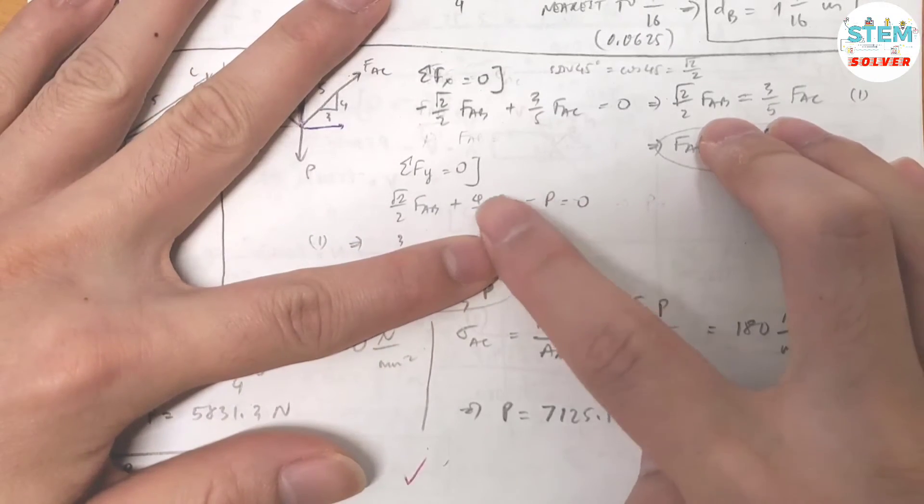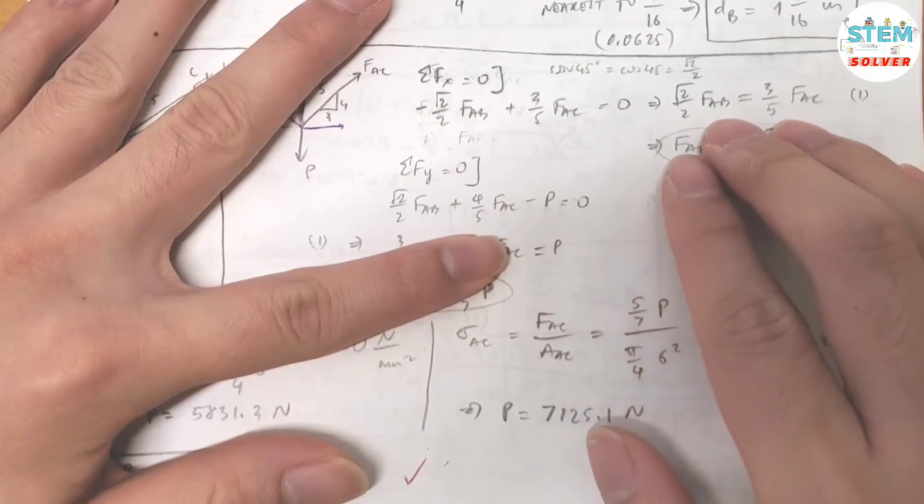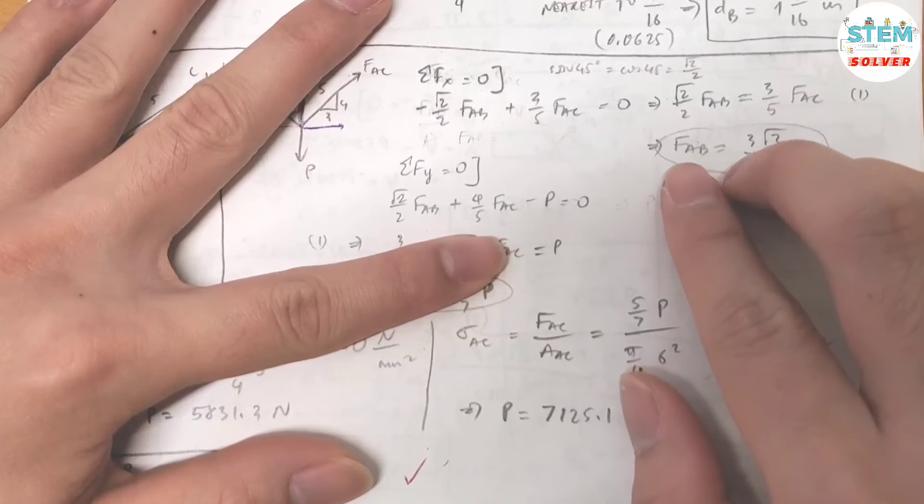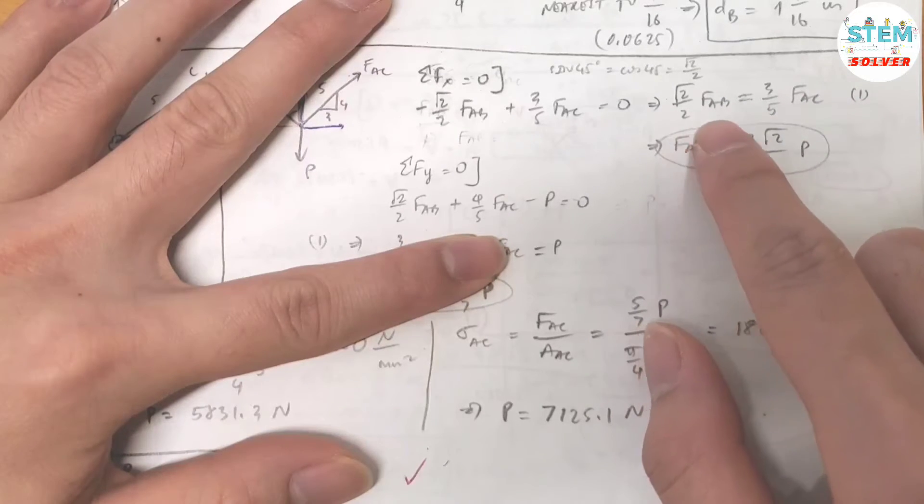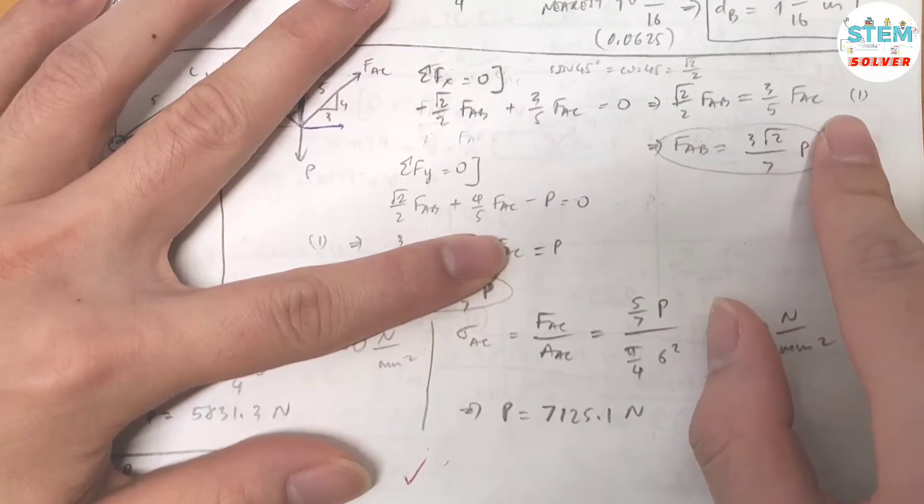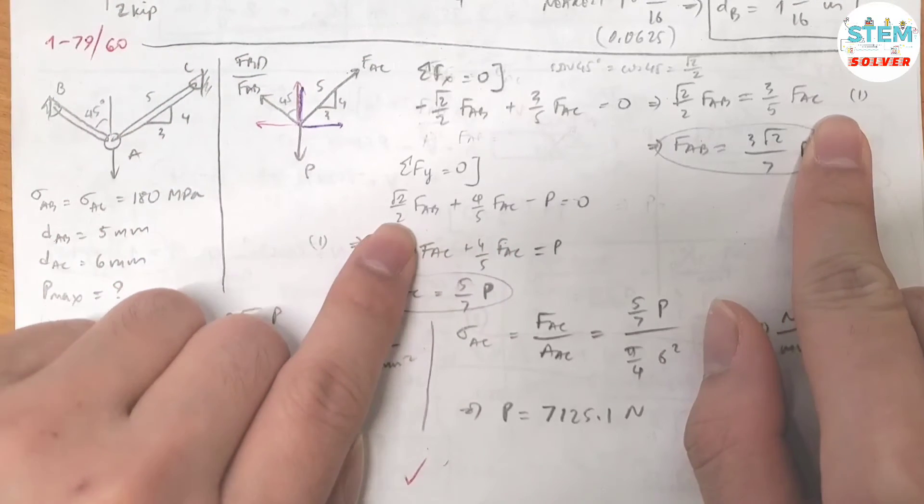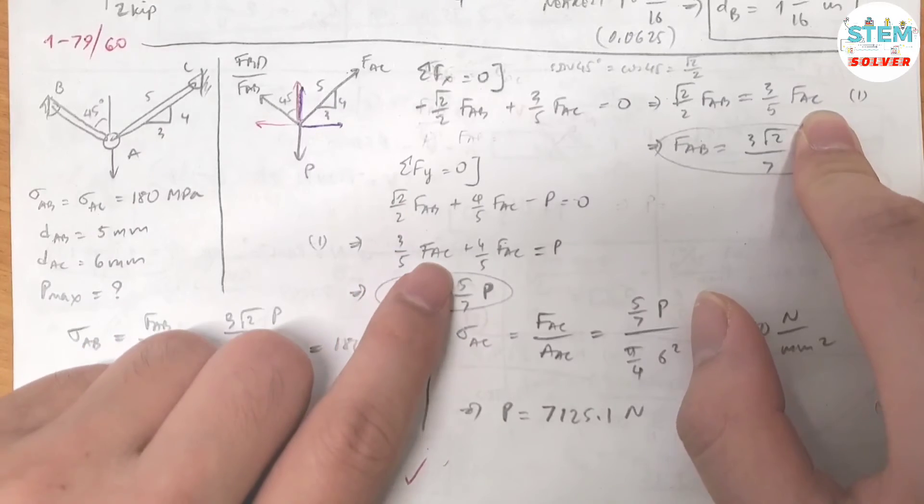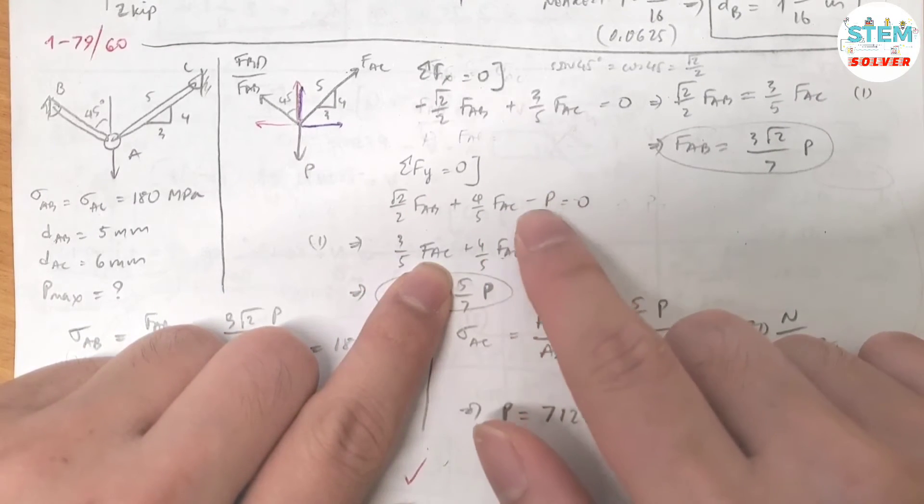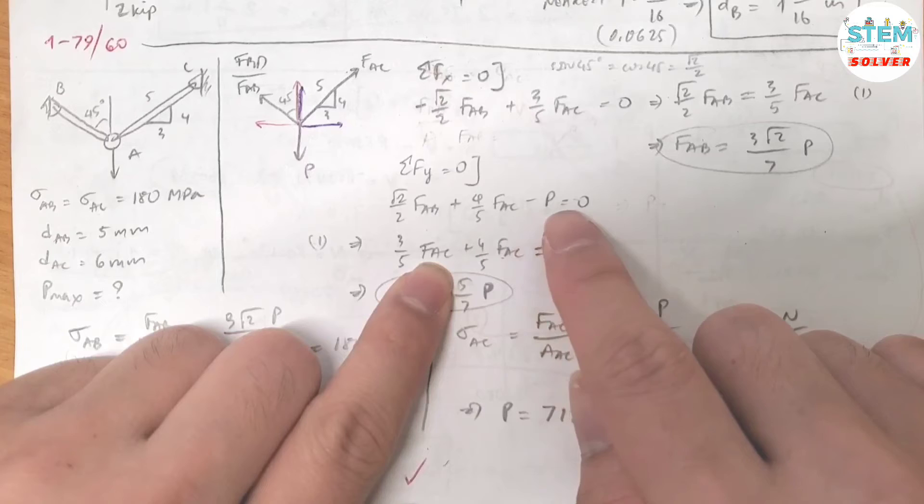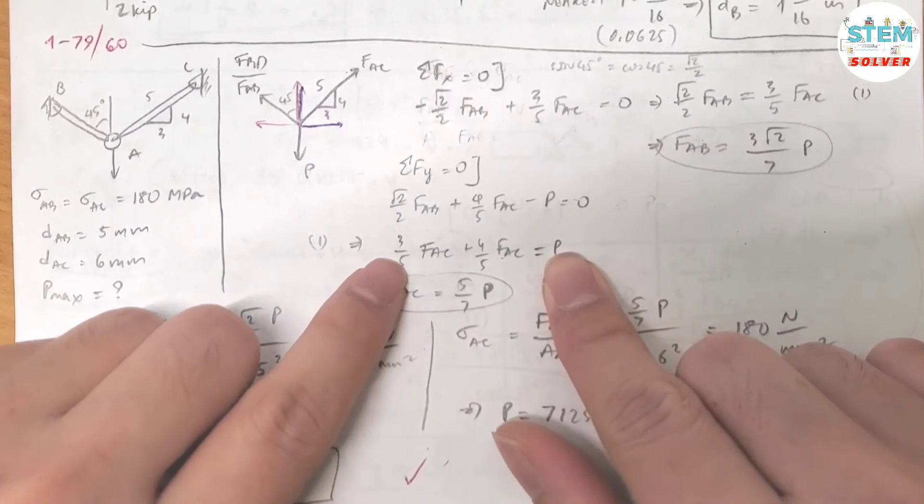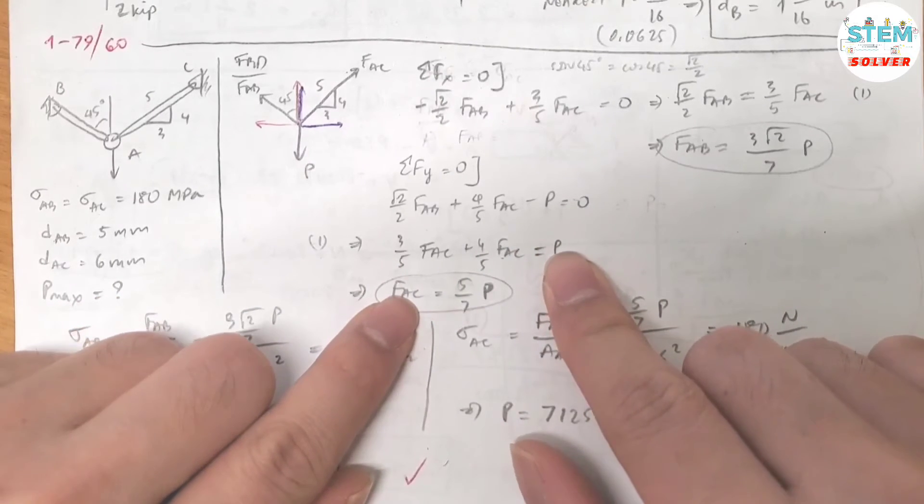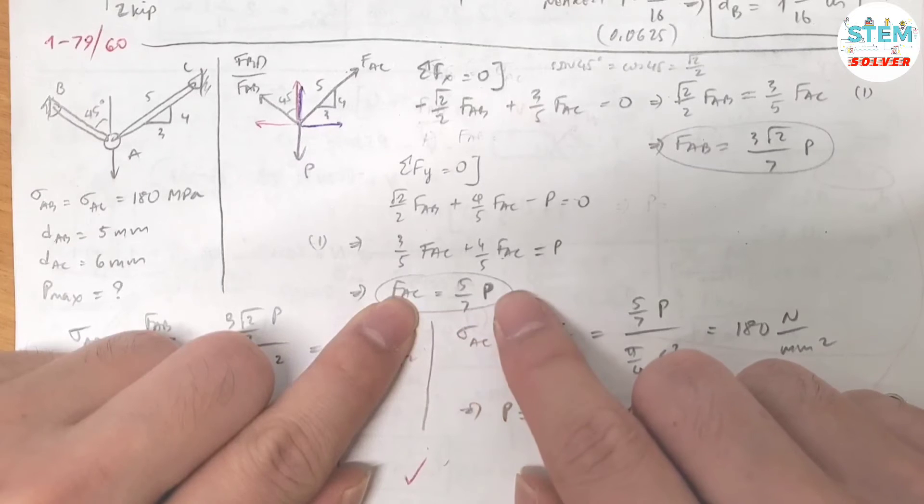Now from equation 1 which is what I set up here, square root of 2 over 2 FAB equals 3 over 5 FAC. So I can replace square root of 2 over 2 FAB by 3 over 5 FAC. So I have 3 over 5 FAC plus 4 over 5 FAC equals P. Then I found out that FAC equals 5 over 7 P.